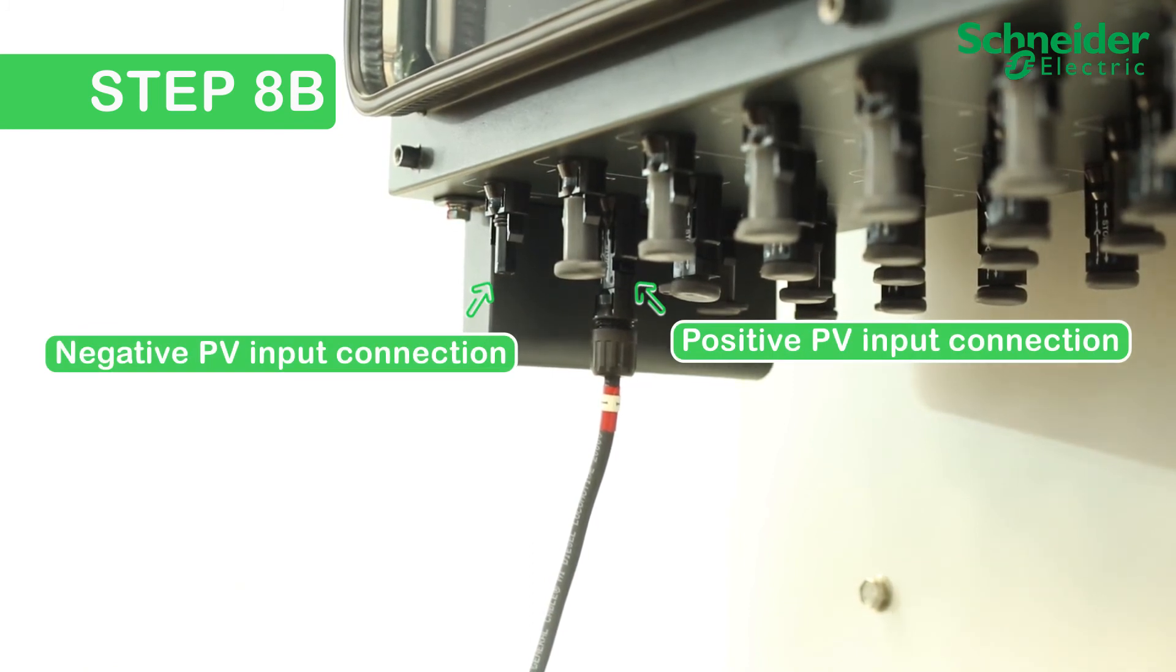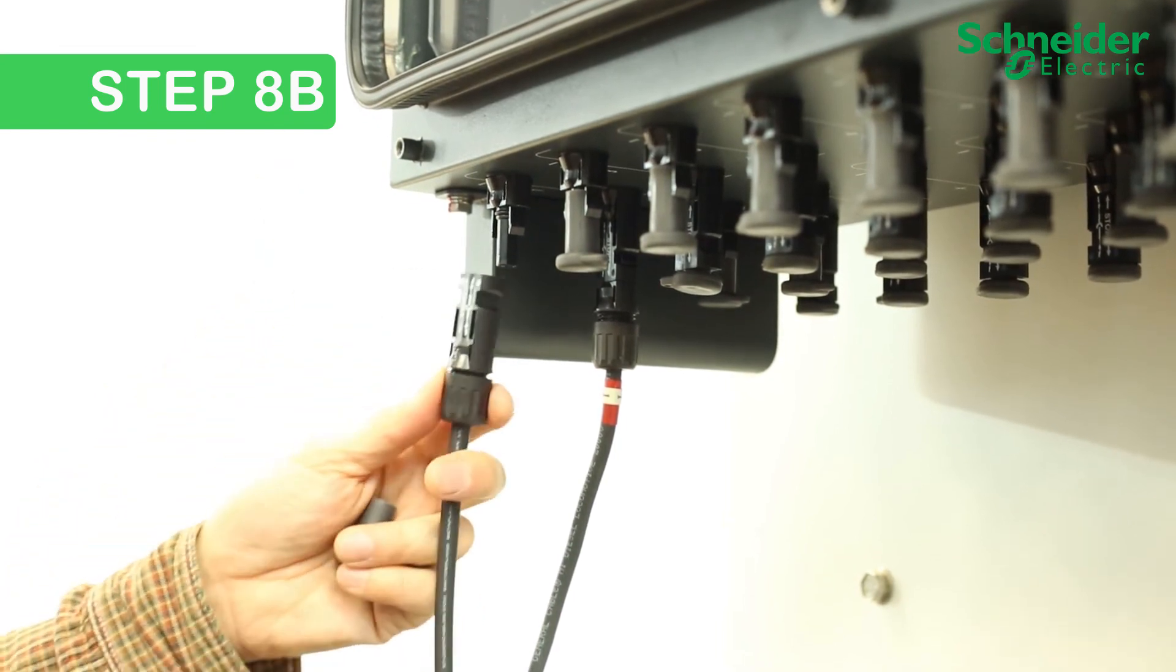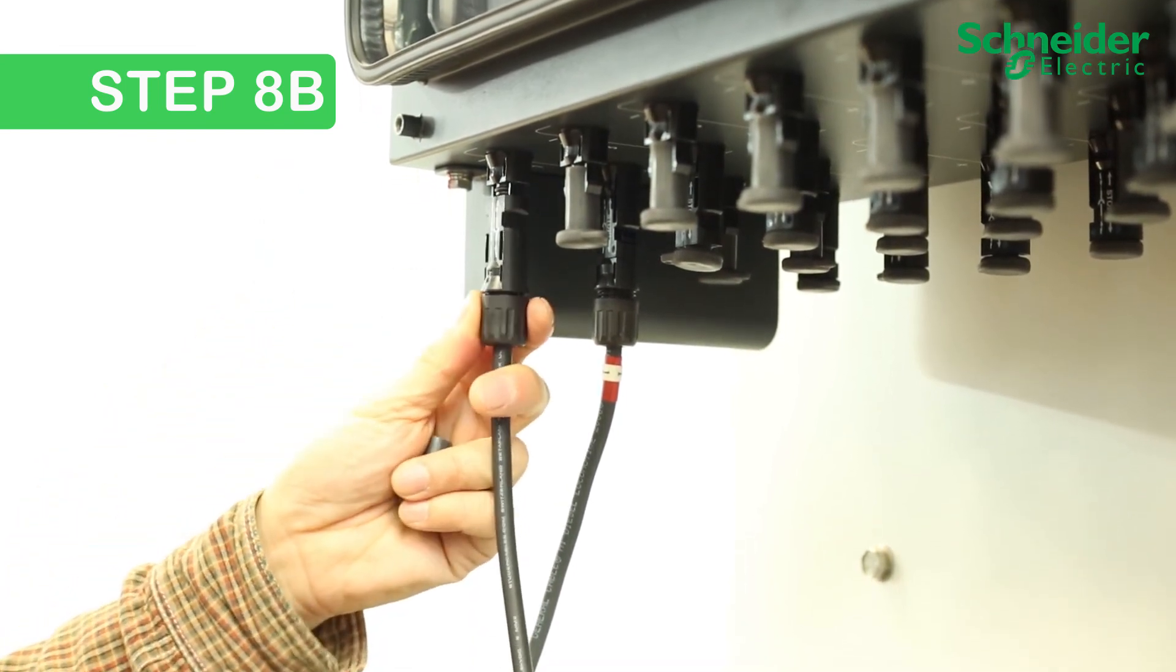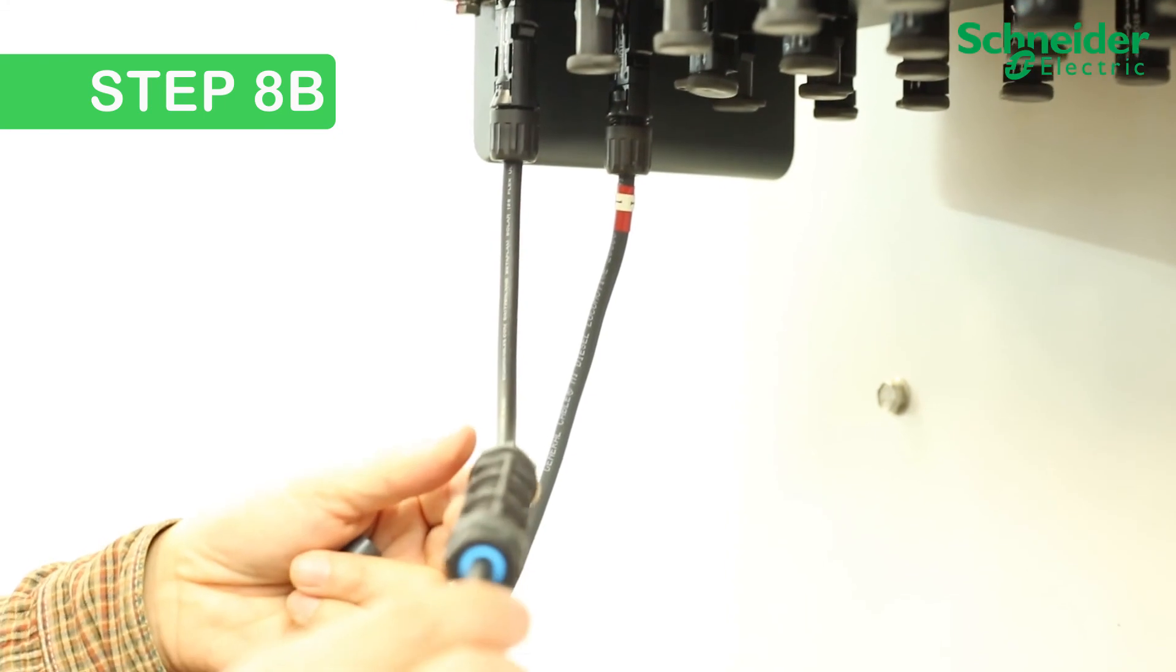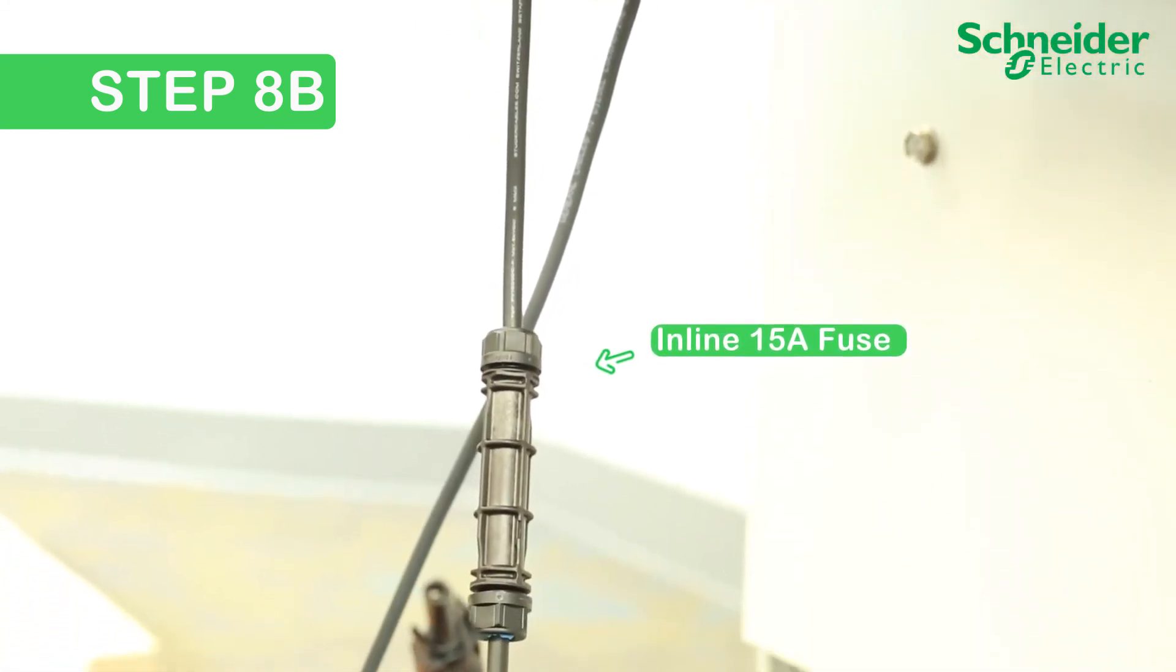Where circuit protection is required on the negative leg, add MC4 15-amp inline fuses to the negative inputs of the CL60E. Your PV string can then connect to the other end, or directly to the CL60E when negative fusing is not required.